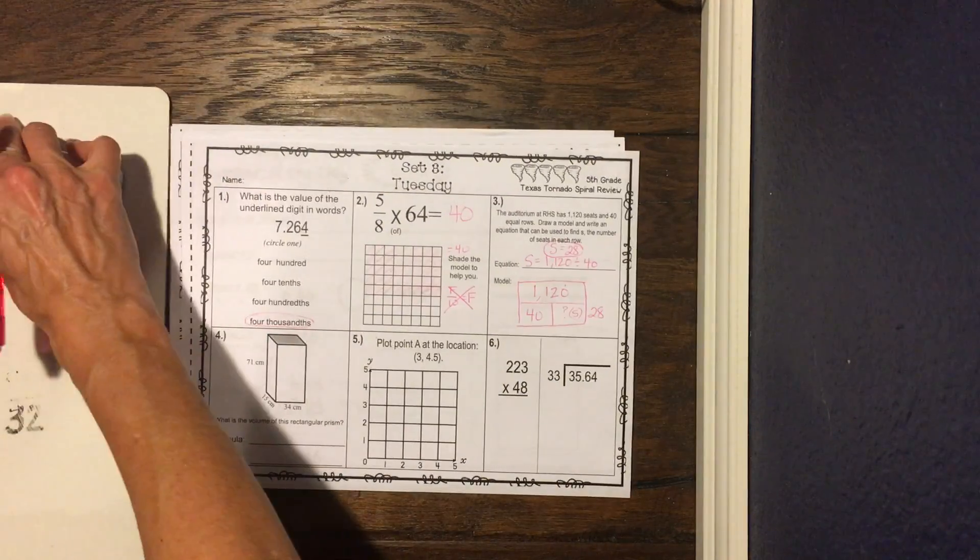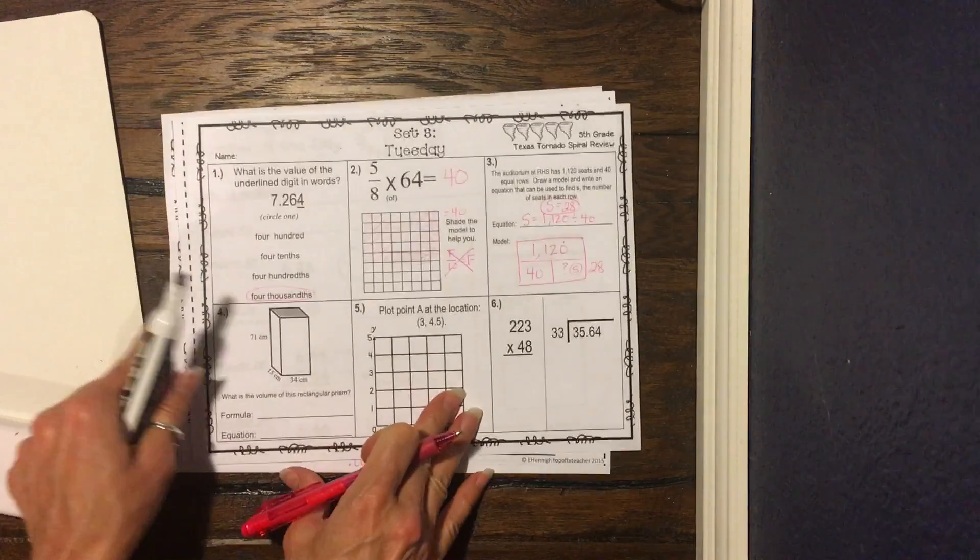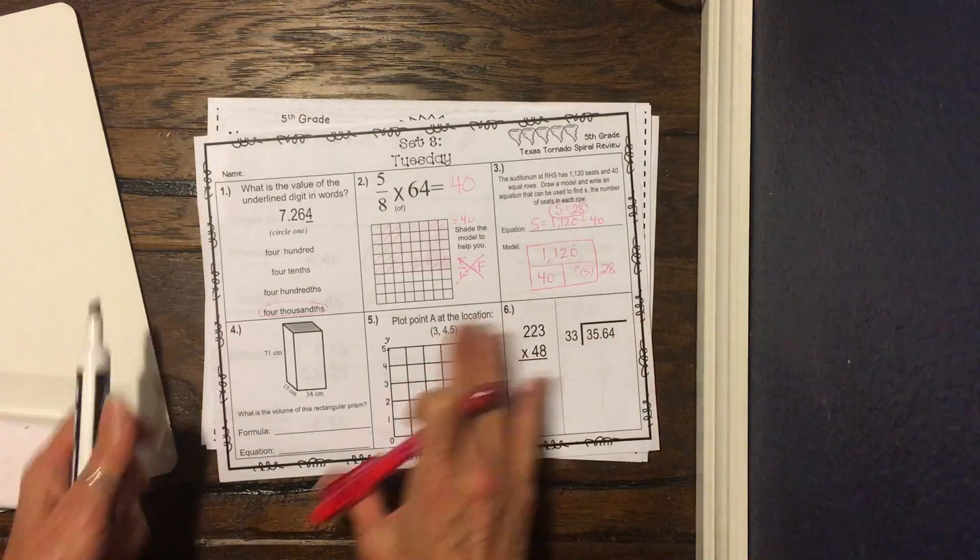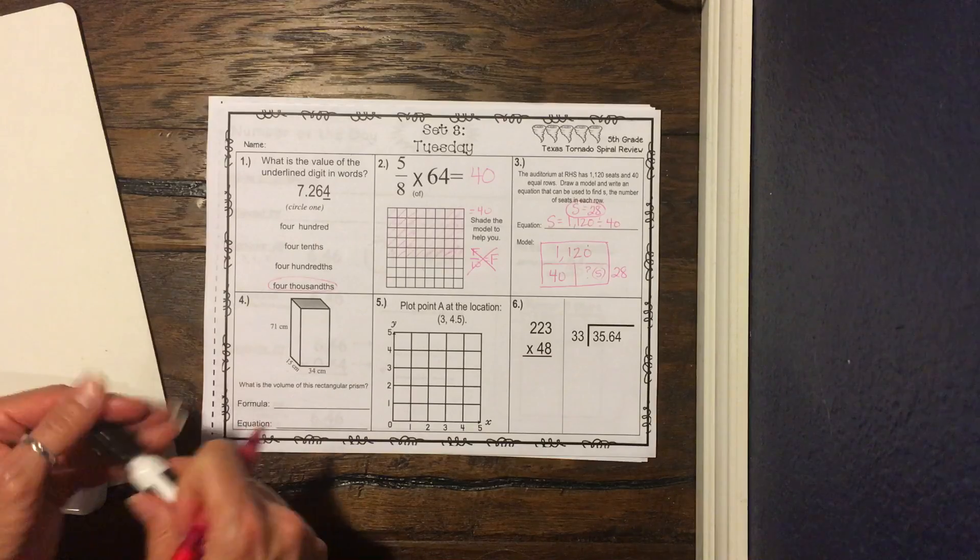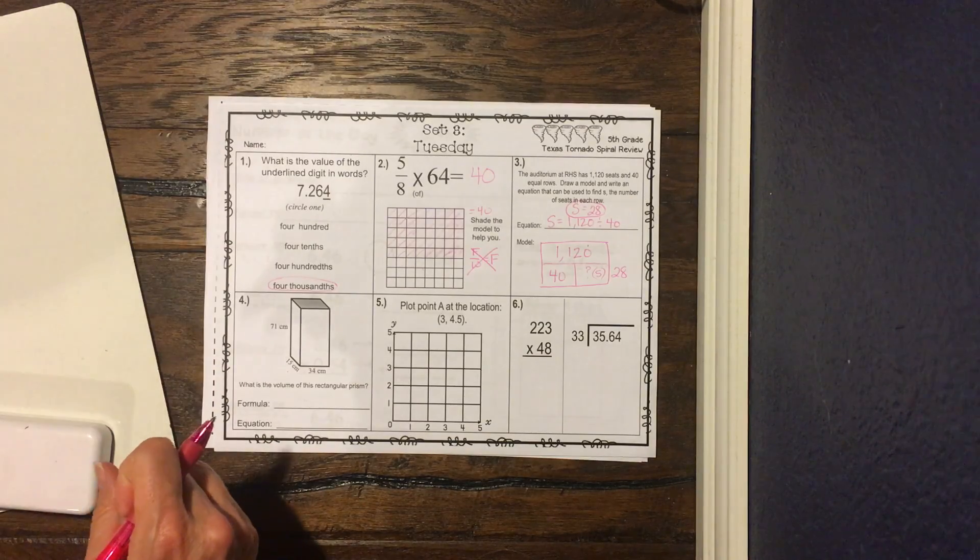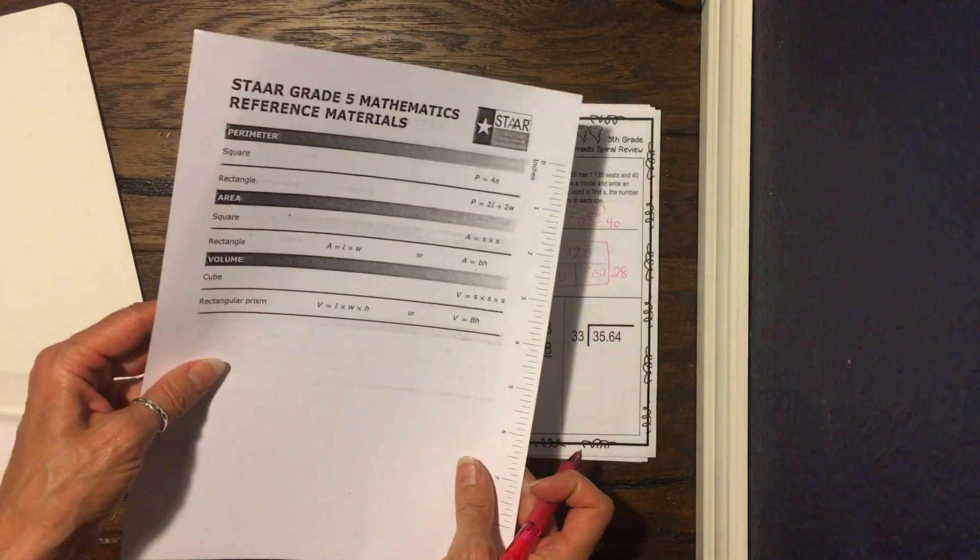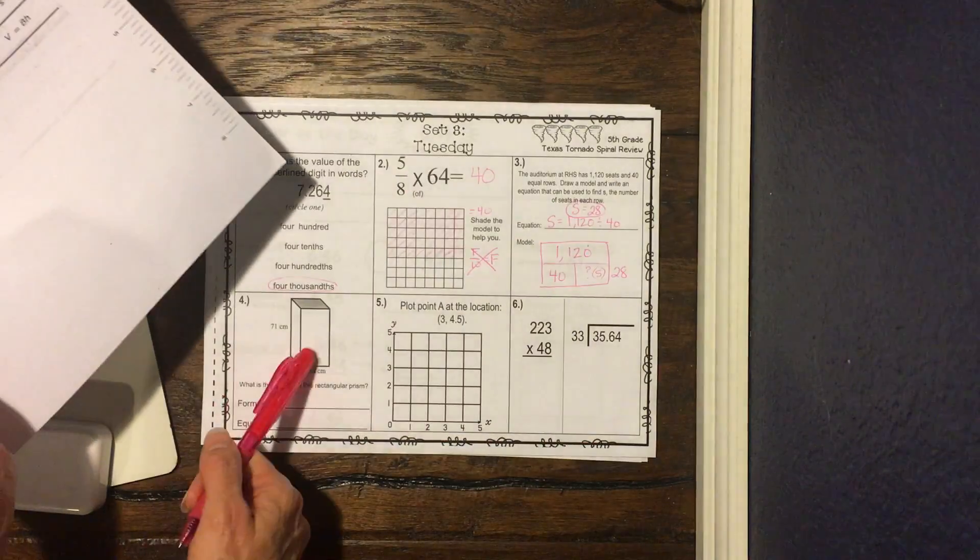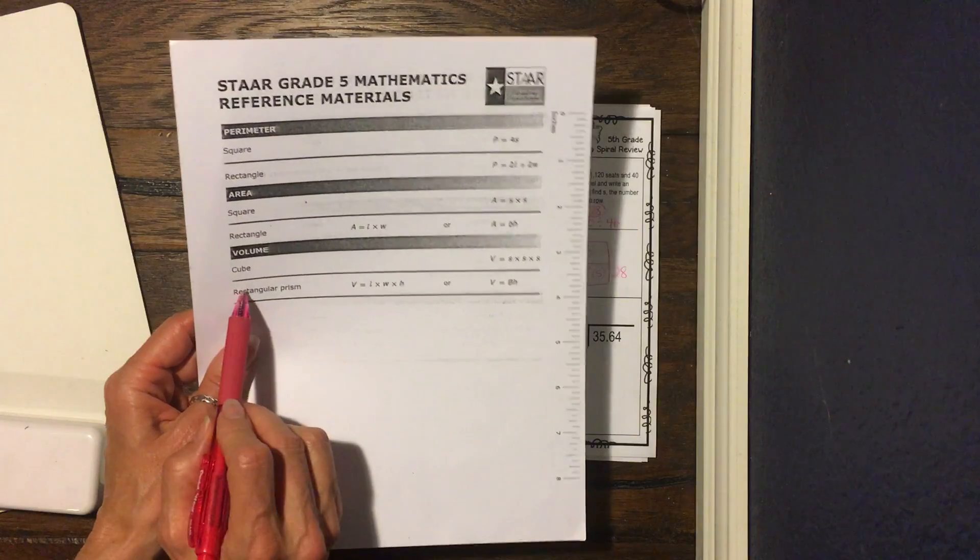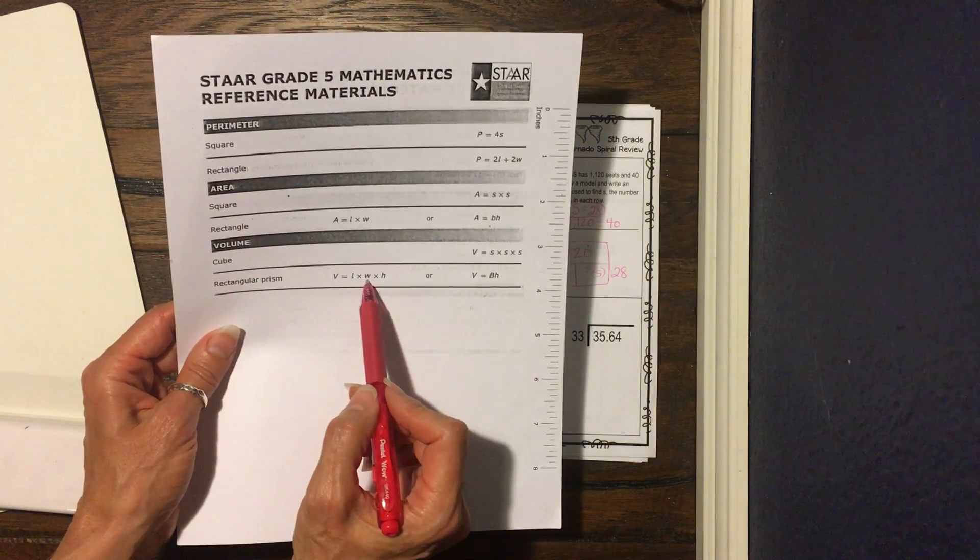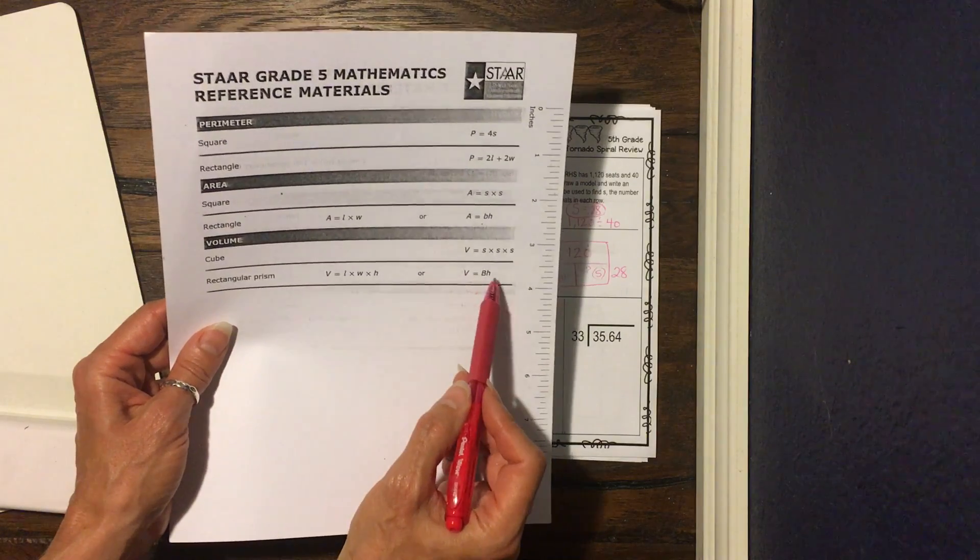Okay, we're looking at number 4. It says, what is the volume of this rectangular prism? Okay, again, guys, we think about formulas anytime we're finding volume. We know we have a formula for that. Remember, you can always look at your reference sheet, and this is gonna give you all your formulas. So if this is a rectangular prism, you can look on here, and it says rectangular prism right here. Here's volume equals length times width times height, or volume equals base times height. So which one of these are we gonna use?